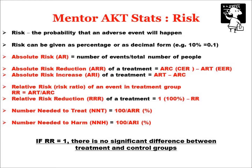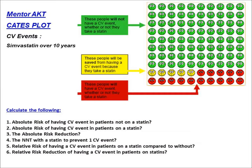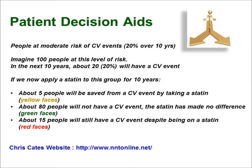Now let's use this to extrapolate risk from a Cates plot. A Cates plot is a diagrammatic, visual representation of risk. When we think about risk, it's only about bad things happening. If we took a population of 100 people and said 20% are going to have cardiovascular events over the next 10 years if we do nothing, that sets the absolute risk in the control population. We now apply a statin to this group for 10 years. Starting with the green faces: 80 people aren't going to have a cardiovascular event whether on a statin or not, so we're not particularly interested in those people.